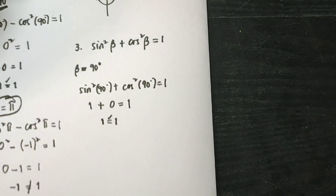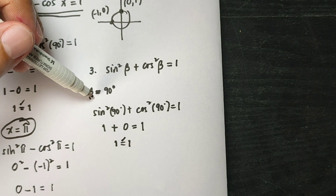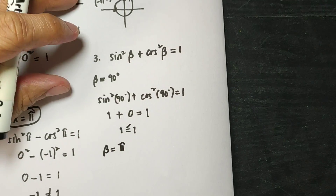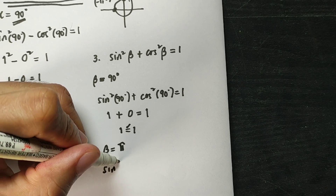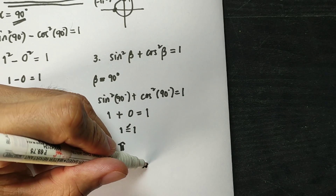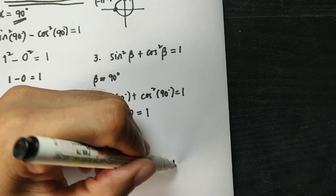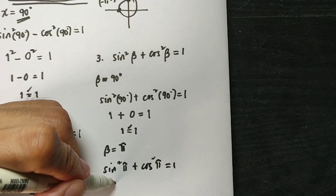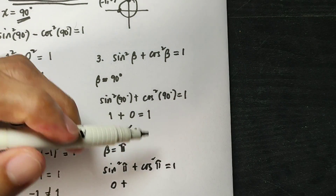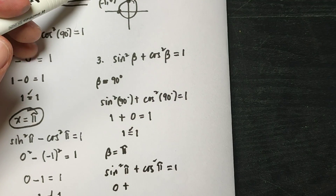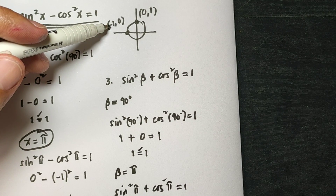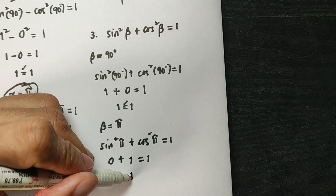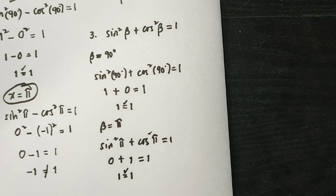The equation is true when theta is 90 degrees. Let us also check when theta is 180 degrees or pi. We get sine squared of pi plus cosine squared of pi equals 1. The sine of pi is 0, so 0 squared is 0. Cosine of pi is negative 1, so negative 1 squared is positive 1. Therefore 0 plus 1 is 1, equals 1. This is true.